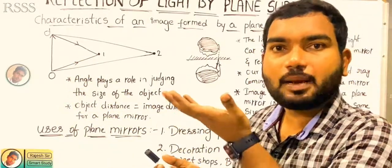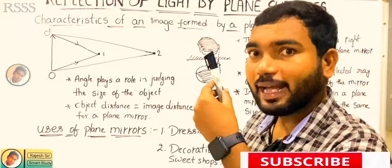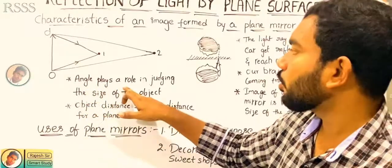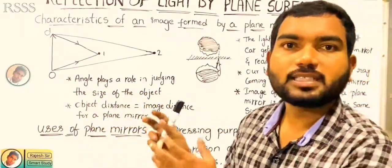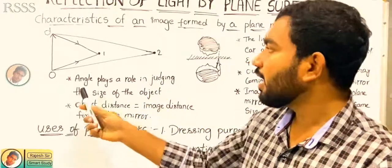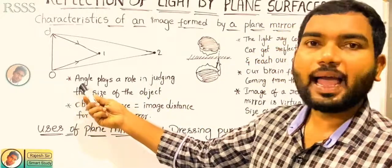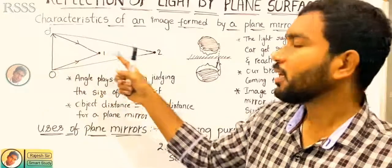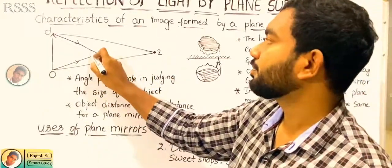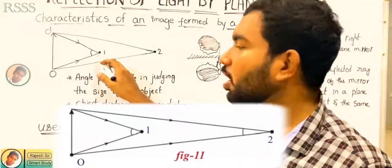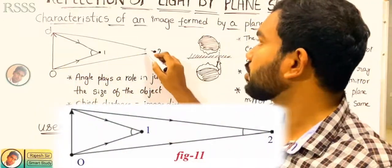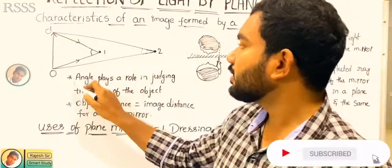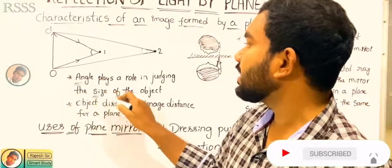The object appears increasing or decreasing in size when it is coming nearer to my eye or is far away from my eyesight. That is the first point. Angle plays a role in judging the size of the object. When I look at the angle, I'll show you the angle. The angle can judge the size of the object.